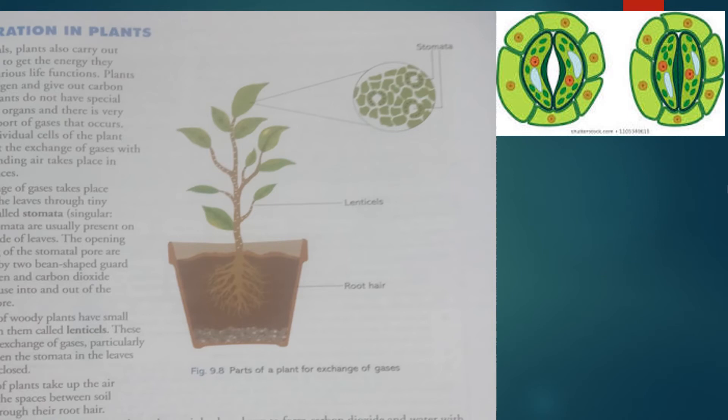Woody stem plants have very small openings we call lenticels. This helps in the exchange of gases, particularly at night when the stomata on the leaves are easily closed. Remember, the stomata during the day are open and during the night they are closed.